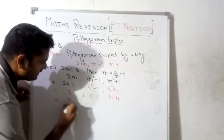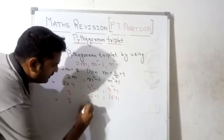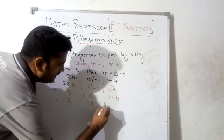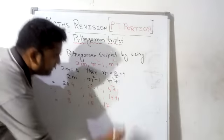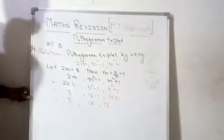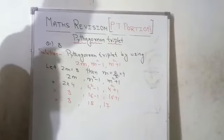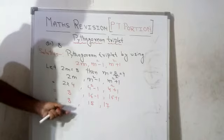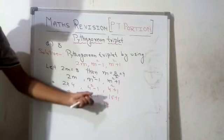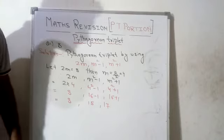So 8, 15, and 17 — these are the required Pythagorean triplet.